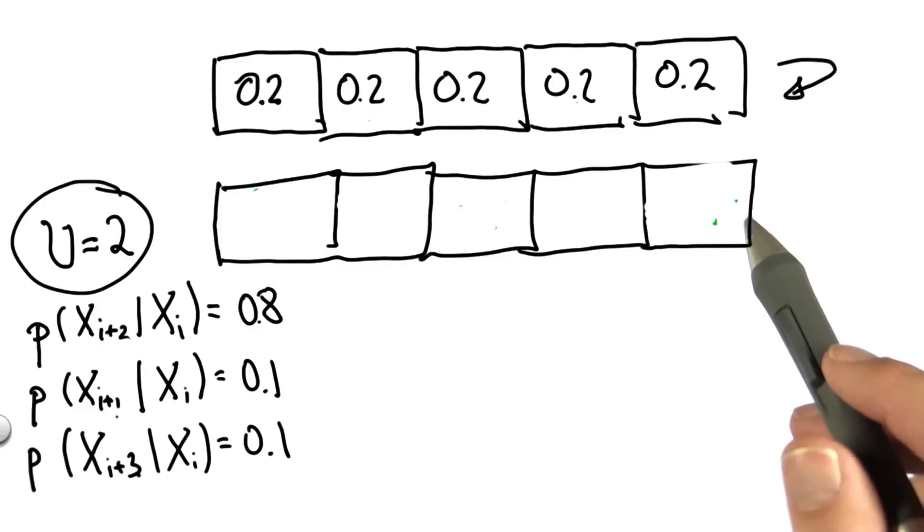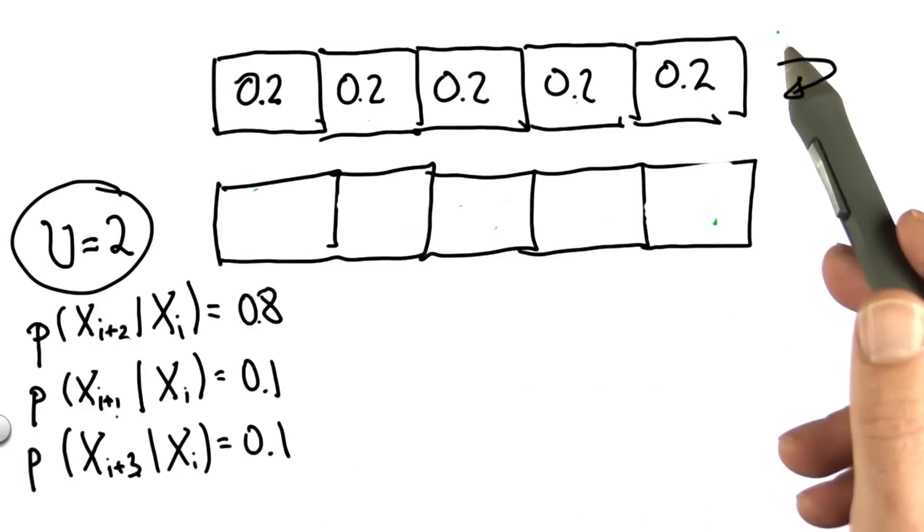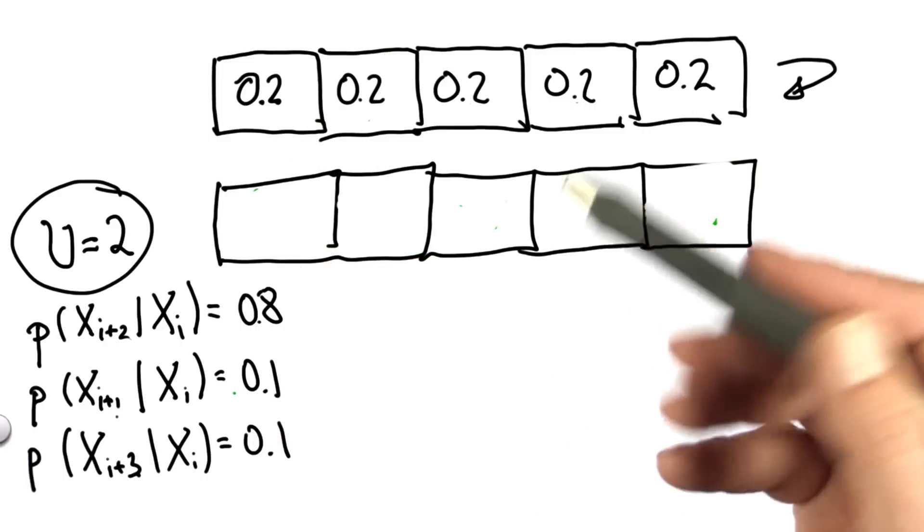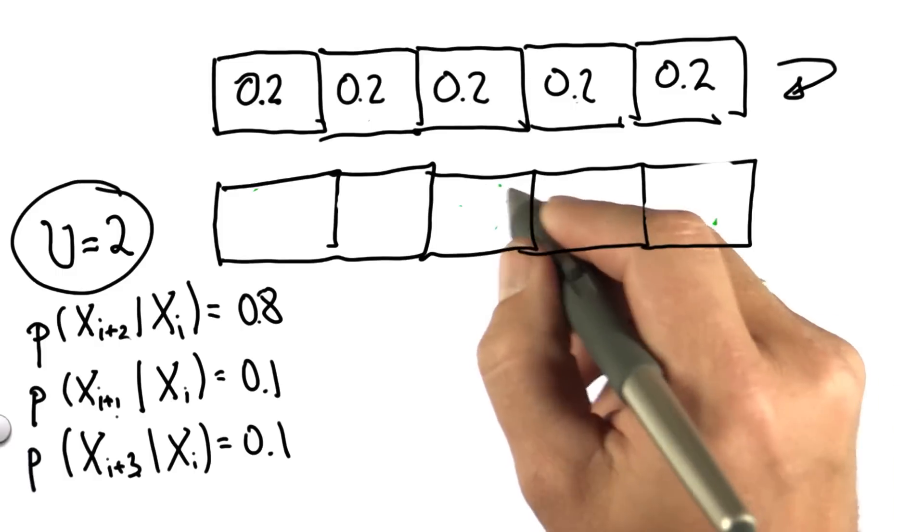The answer, as it turns out, will be just 0.2 everywhere. And the reason is, with every grid cell being equally likely, applying this motion model will still make each grid cell equally likely.